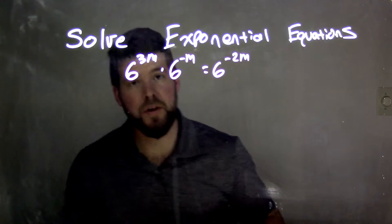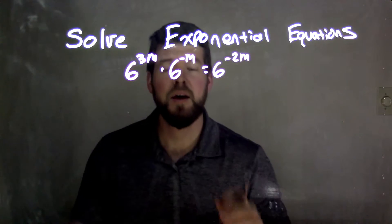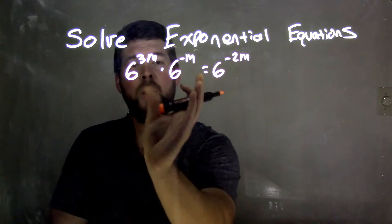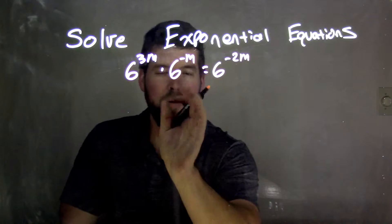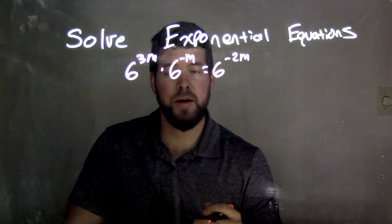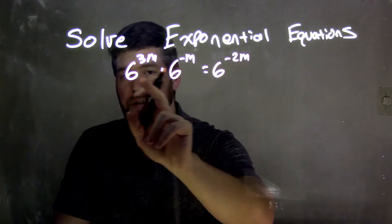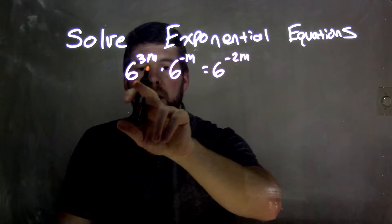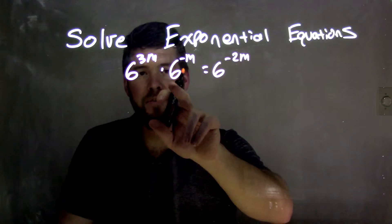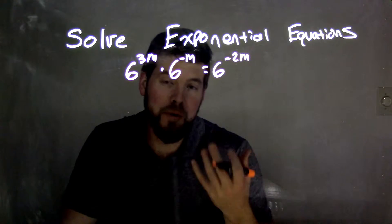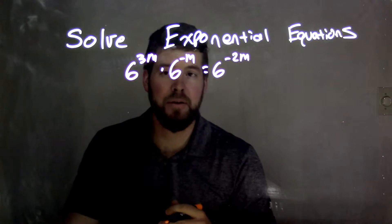To solve this, we have a lot of 6s in our base, and we want to get one 6 on each side as a base. With multiplication and exponents, if we have the same base, what we're allowed to do is add our exponents.